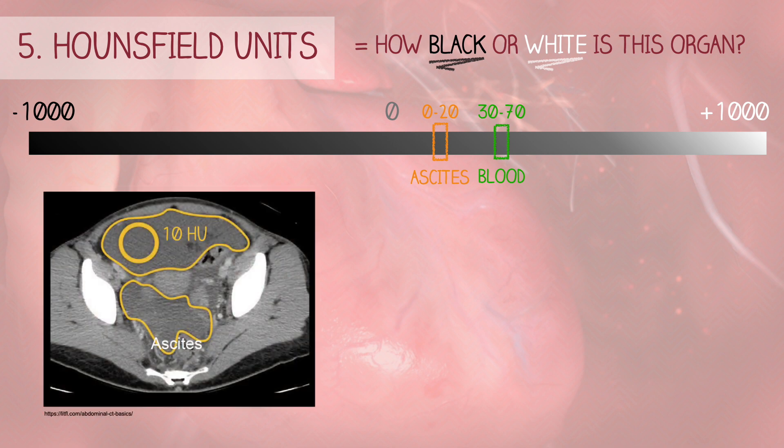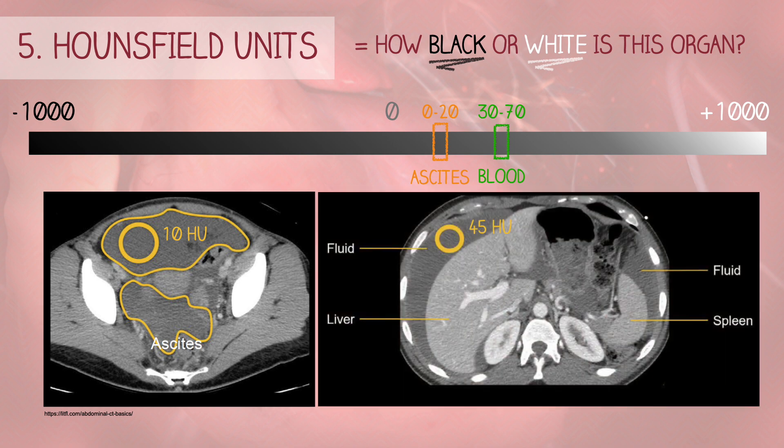For example, in this CT scan, the pelvic fluid measures 10 Hounsfield units, suggesting it may be ascites. In another example, the fluid around the liver measures 45 Hounsfield units. Given that the patient presented with trauma, this fluid is more likely to be blood.